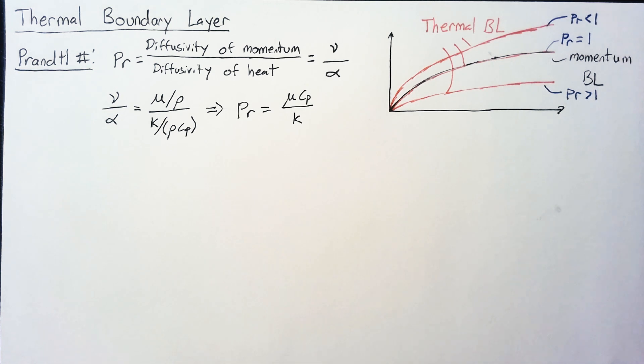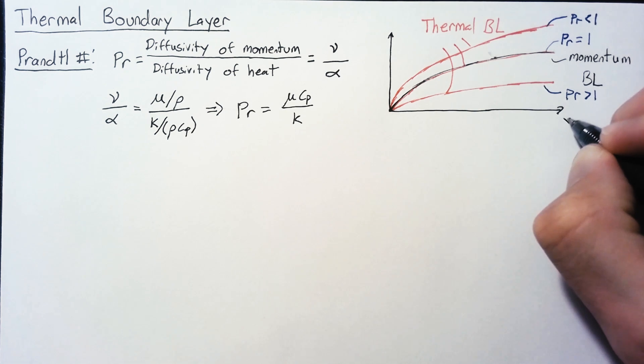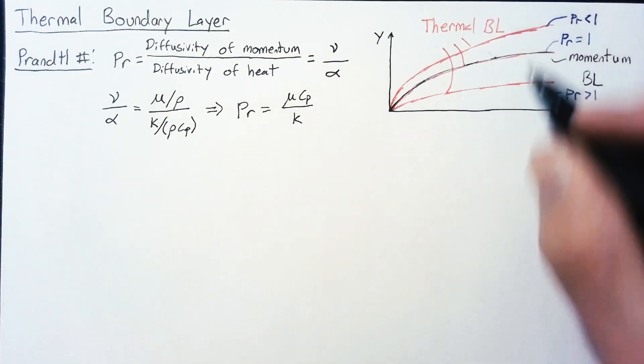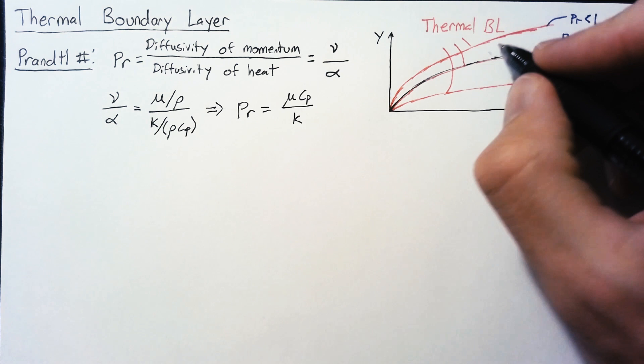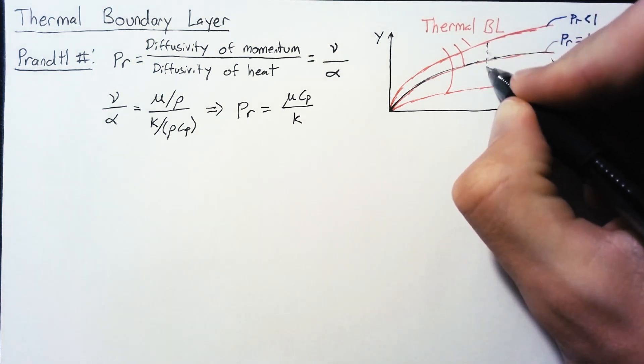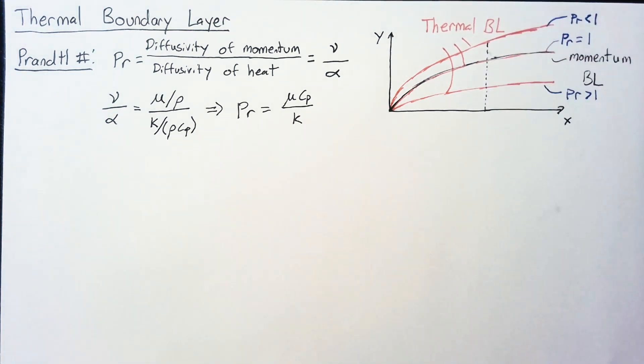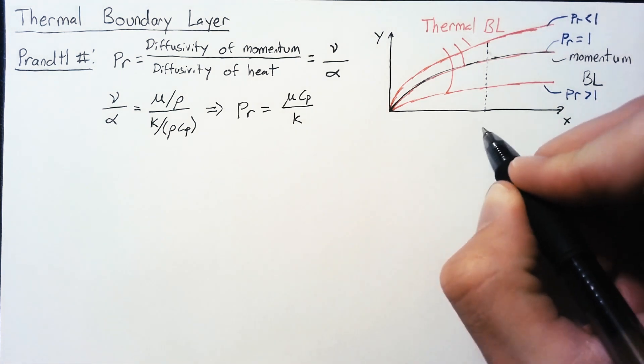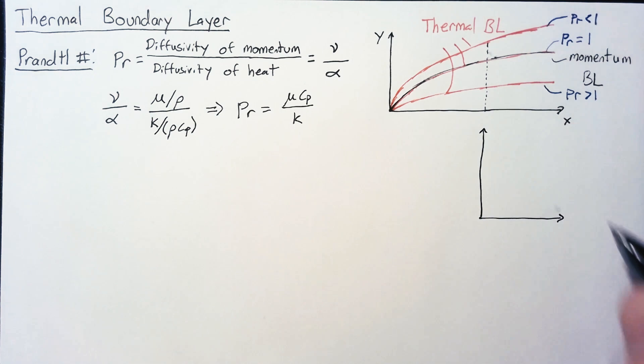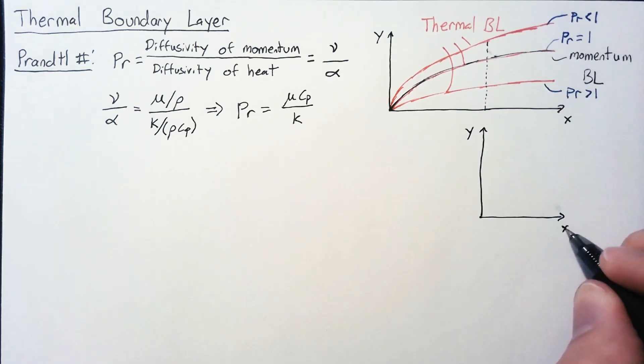It sometimes helps to see boundary layers in a slightly different light. The way we've drawn it, this is our x location, this is our y location, and what we've plotted is that point where either the temperature becomes that of the surroundings, or where the velocity becomes the same as the surrounding flow. What we're going to do instead is take a cross-section here, a single value of x, and now we're going to look at how the velocity changes and the temperature changes in the y direction.